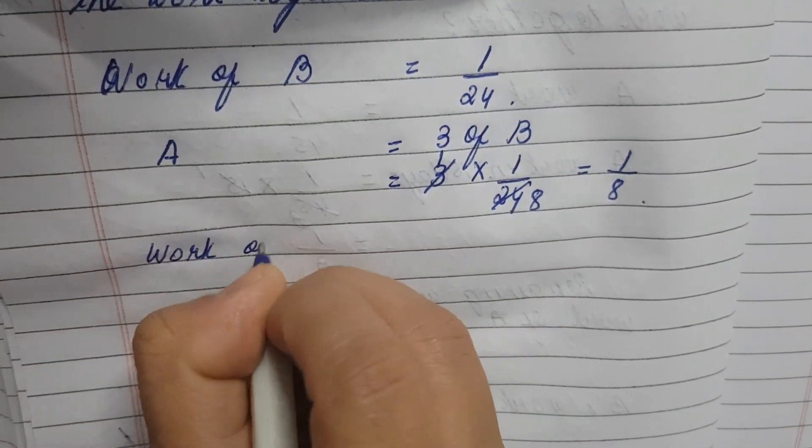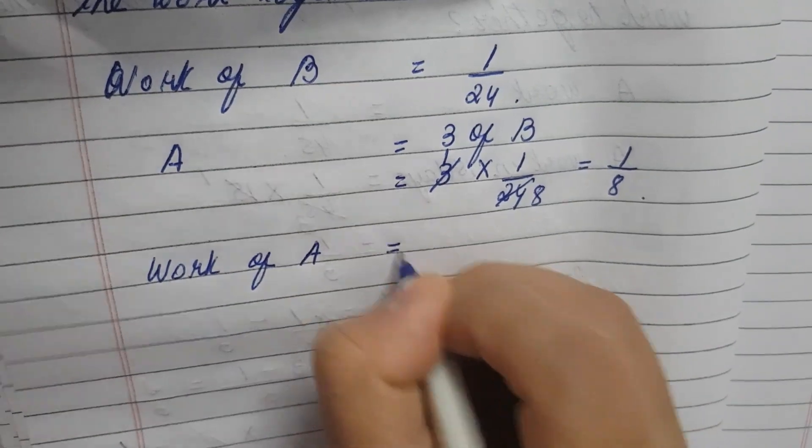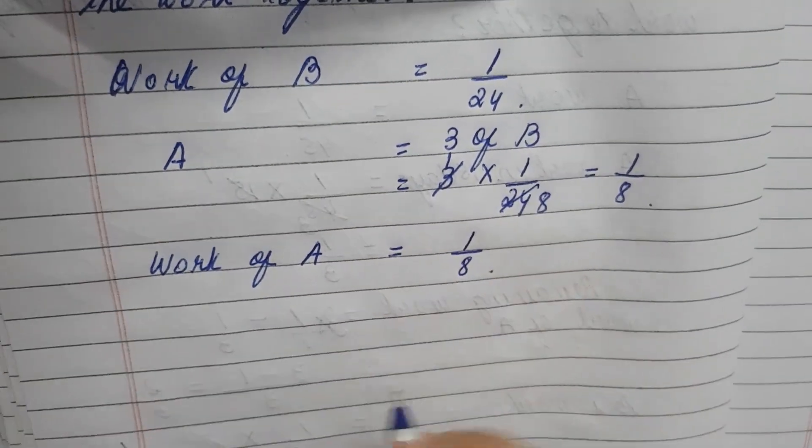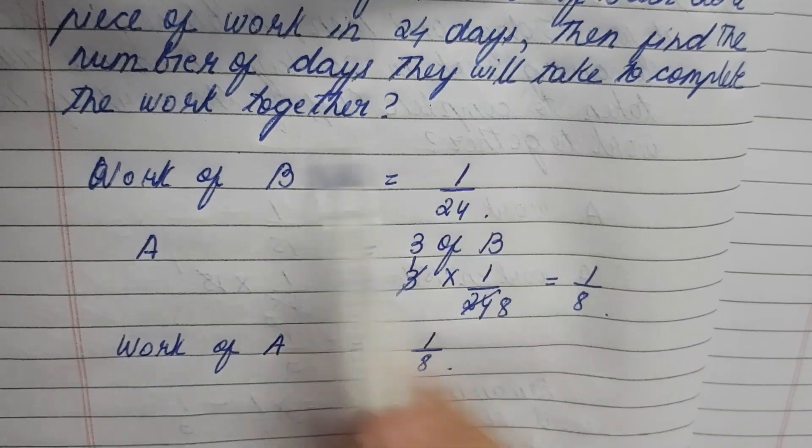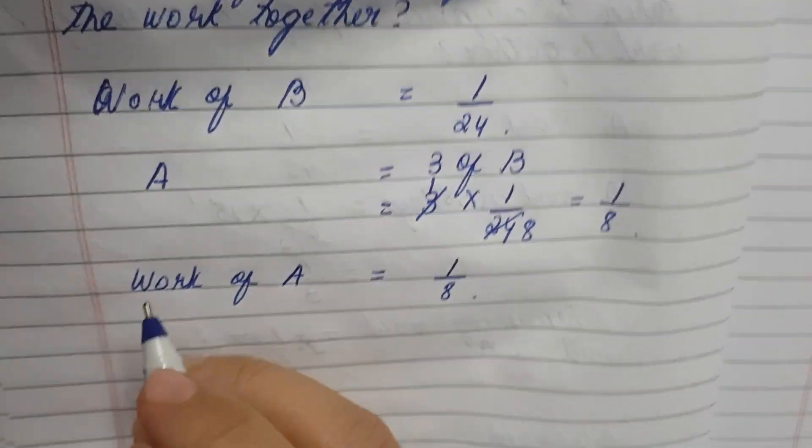Work of A is equal to 1 by 8. Find the number of days they will take to complete the work together. Together now you have to find out.